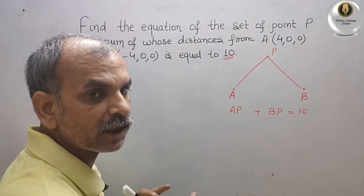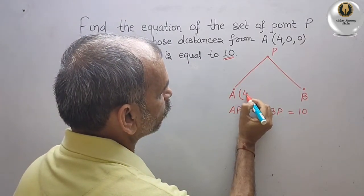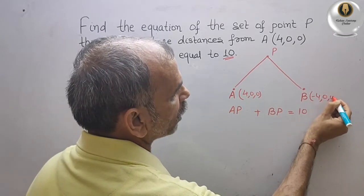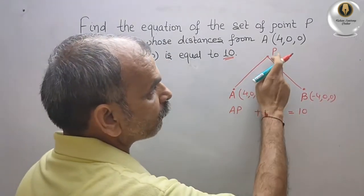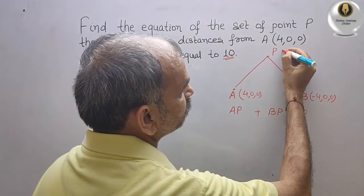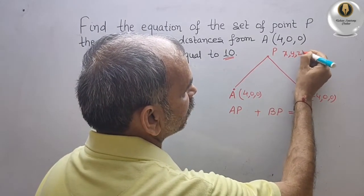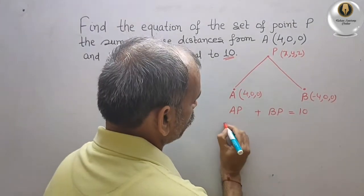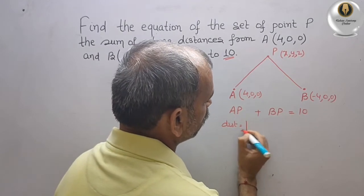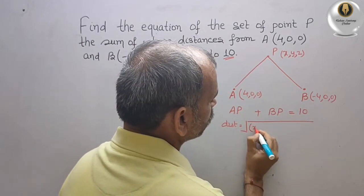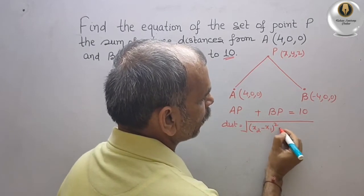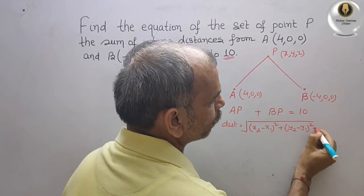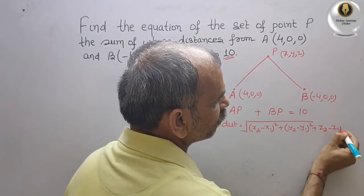Now we will write the coordinates. A is (4, 0, 0) and B is (-4, 0, 0), and the coordinates of P are (x, y, z). Now we will write the distance formula: root over (x₂ - x₁)² + (y₂ - y₁)² + (z₂ - z₁)², all under square root.